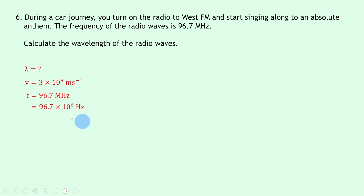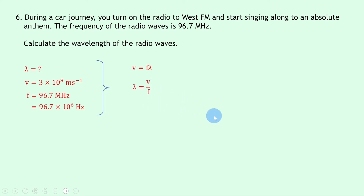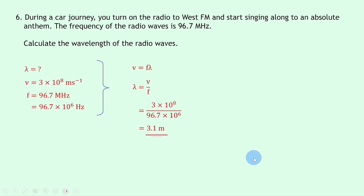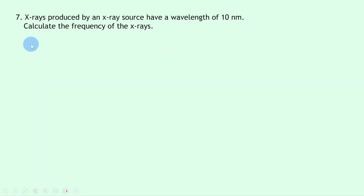Writing down the equation relating speed, frequency, and wavelength: v = f·λ. Rearranging for lambda, divide both sides by f to get λ = v / f. Substituting in the numbers gives 3 × 10⁸ divided by 96.7 × 10⁶, and putting that into your calculator should give an answer of 3.1 meters.